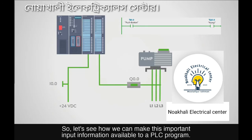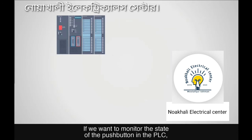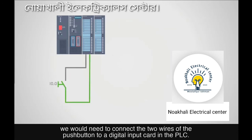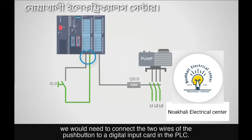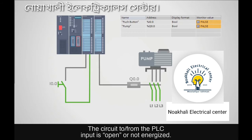Let's see how we can make this important input information available to a PLC program. If we want to monitor the state of the pushbutton in the PLC, we would need to connect the two wires of the pushbutton to a digital input card in the PLC. When the pushbutton is not pressed, the PLC would see the input state as OFF or as a 0. The circuit to or from the PLC input is open or not energized.